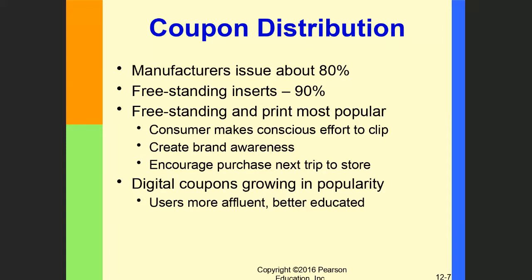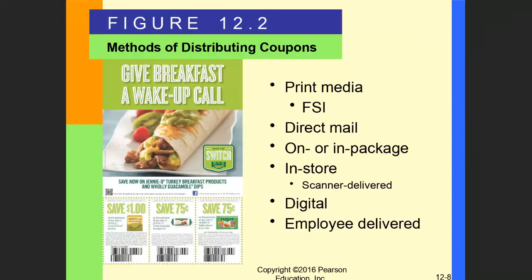There are different ways to distribute coupons. You can put them inside a massive, popular newspaper — freestanding inserts (FSIs) — so people can cut and redeem them. Coupons can also be distributed by employees inside a store: for example, when you eat at McDonald's they give you coupons for coffee, free donuts, or breakfast items — specifically for products not heavily in demand, to increase demand. You can also distribute coupons by email, direct mail, and social media.